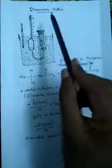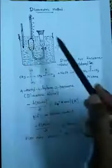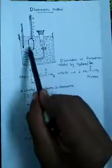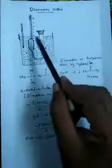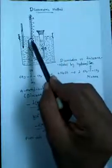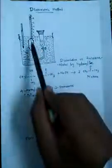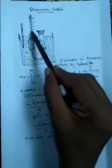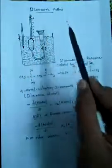In the dilatometric method, we measure the change in volume of the reaction mixture. The reaction mixture is taken into this tube. As the reaction starts to give a product, there will be a change in volume, and the reaction mixture will rise up into this capillary.